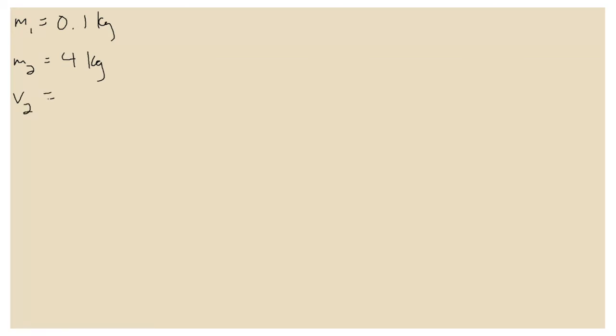Your calculation should have looked something like this. The mass of the bullet, M1, was 0.1 kilograms. The mass of the wooden block was 4 kilograms. The initial velocity V2 of the block was 0 meters per second, since it was just sitting there before the bullet was fired. The change in height for the block was 1.52 meters, and we are looking for the initial velocity of the bullet, V1. What you need to find first is V', the velocity of the bullet-block system after the collision, using conservation of energy.